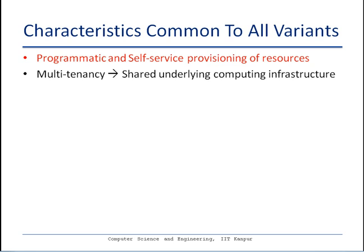Another characteristic that is important and common for most cloud variants is multi-tenancy. This means that for a cloud platform, there are multiple consumers sharing the common underlying computing infrastructure set up by the cloud provider. For example, in an infrastructure as a service cloud, different virtual machines belonging to different consumers could be running on a single shared physical host. Multi-tenancy brings further issues and implications, which we will discuss in subsequent lectures in more detail.